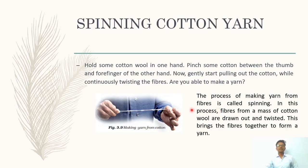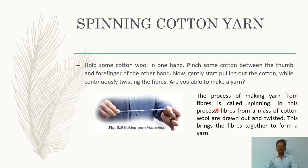A similar structure to yarn can be seen by doing this activity. The process of making yarn from fibers is called spinning. So today's topic is spinning — we will understand what spinning is and discuss topics related to it. In this process, fibers from a mass of cotton wool are drawn out and twisted, just as we did in the activity, but with the help of machinery, which brings the fibers together to form a yarn.